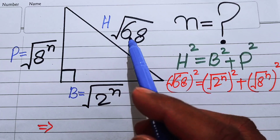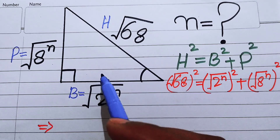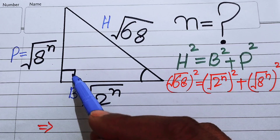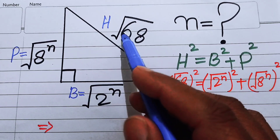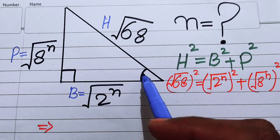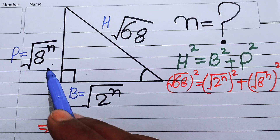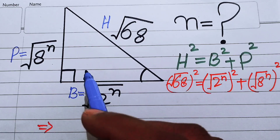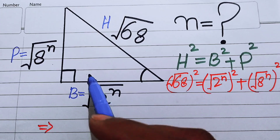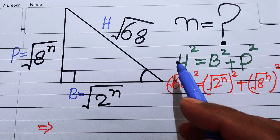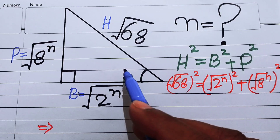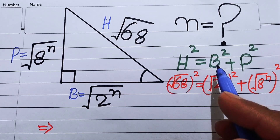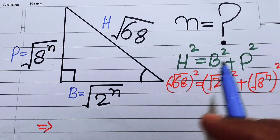In a right triangle, the side opposite to the right angle is known as the hypotenuse, the side joining the two base angles is known as the base, and the third side is known as the perpendicular. One important property of the right triangle is that the Pythagorean theorem holds, which states: hypotenuse squared equals base squared plus perpendicular squared.